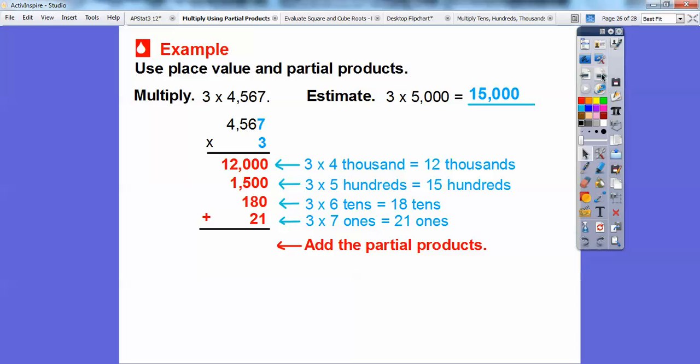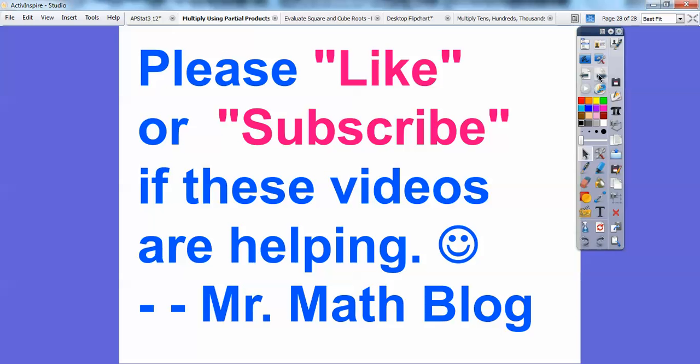So now we're going to add all those partial products up. Let's add 1 plus all these zeros is 1. 2 plus 8 is 10, so I'll put a 0 here and carry the 1. So 1 plus 0 plus 5 plus 1 is 7. And then no carry. So 2 plus 1 is 3. And then finally plus 1. So we get 13,701. And is that reasonable with our estimation? Yeah, it is because we said it was going to be a little bit less than that. Told you this lesson was easy. All right, you guys, take care.